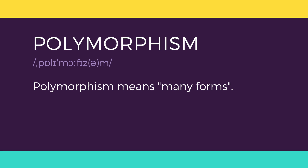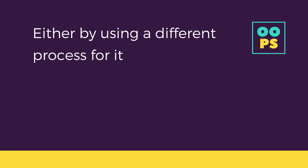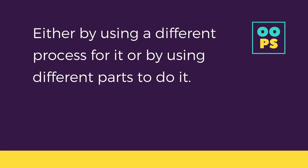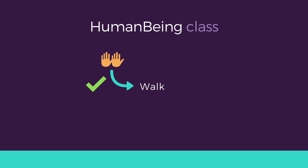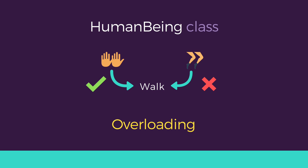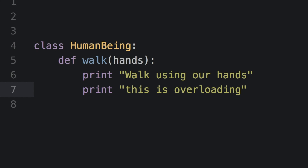Last but not least, polymorphism. Polymorphism is a concept which allows us to redefine the way something works, either by changing how it is done or by changing the parts using which it is done. Both ways have different terms — one is called overriding and the other is called overloading. If we walk using our hands instead of our legs, we change the part used to perform something — this is overloading. Overloading is when a function takes a different argument; the number or type of argument changes.